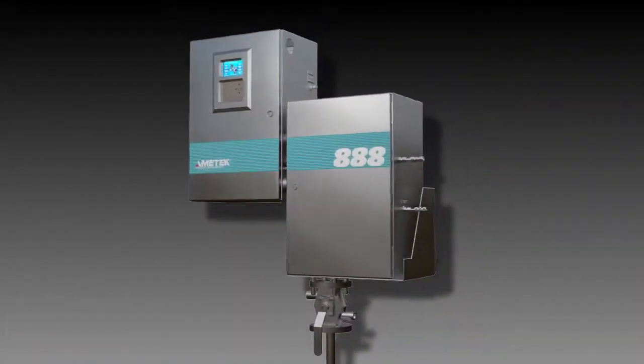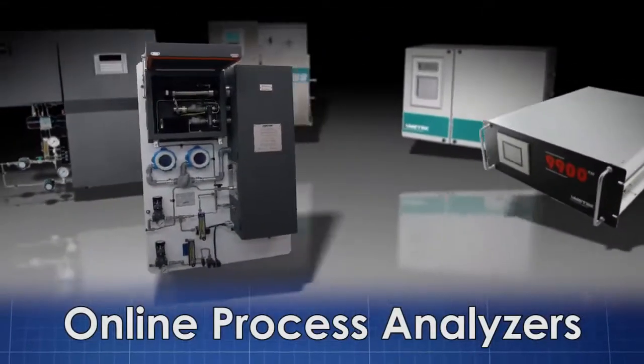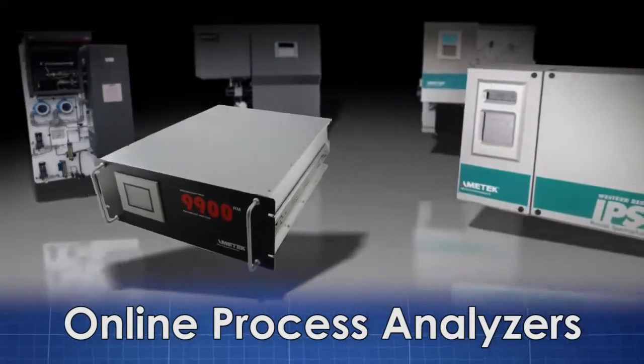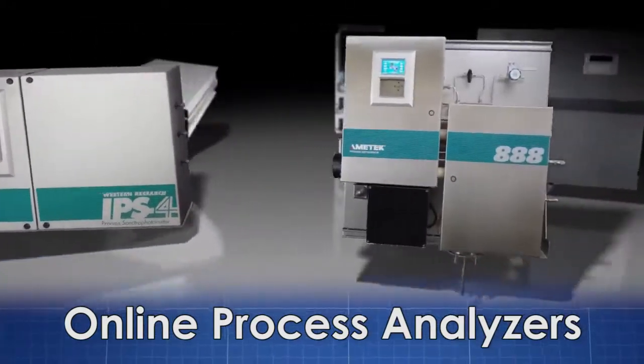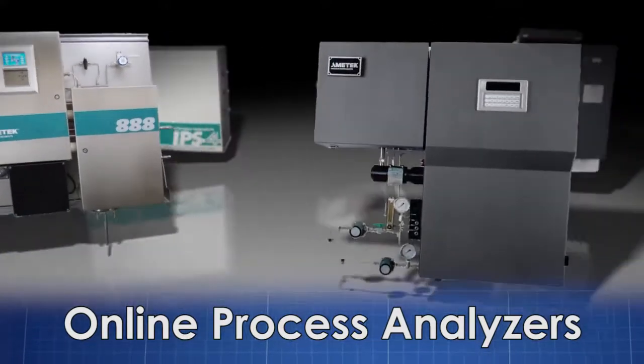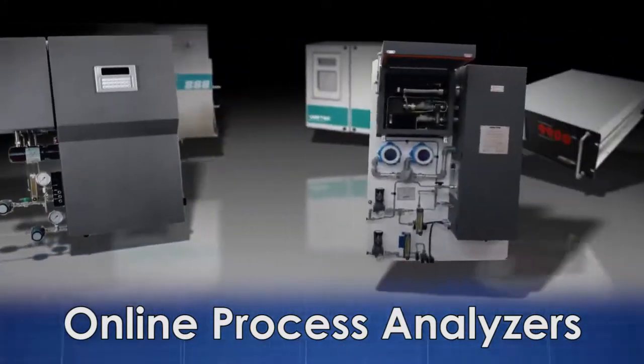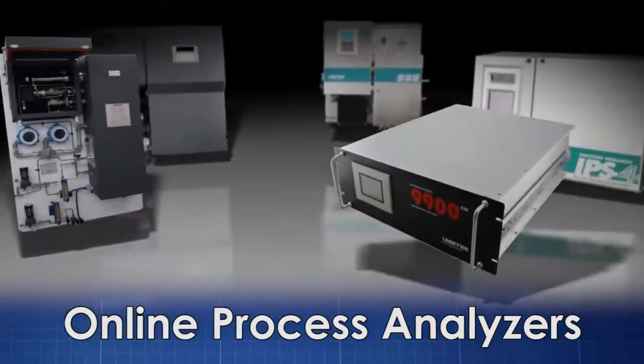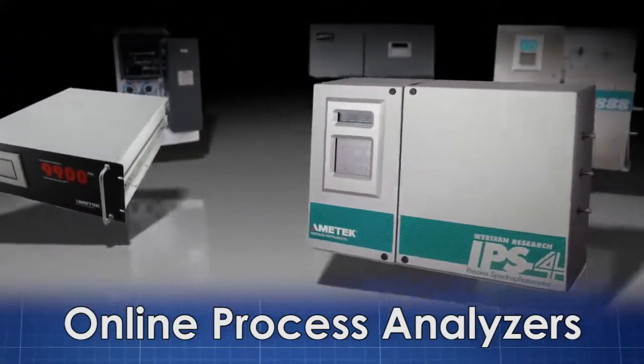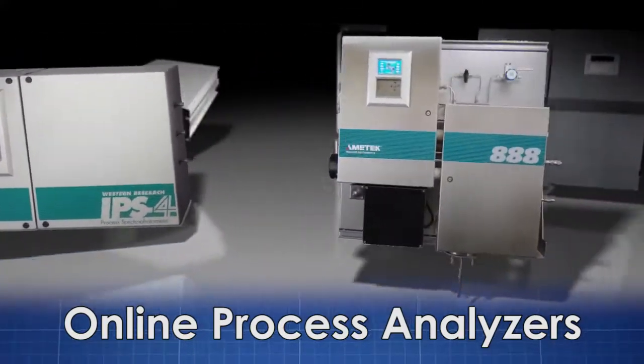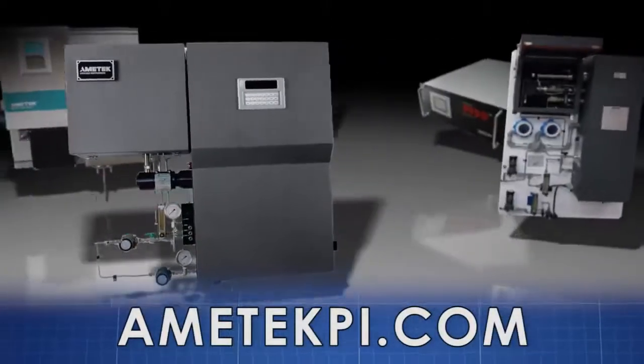Amitec Process Instruments designs and manufactures an extensive line of online process analyzers for the refining, petrochemical, and natural gas industries. Learn more about the industry-leading Model 888 tail gas analyzer and the other quality Amitec Process Instruments products by visiting amitechpi.com.